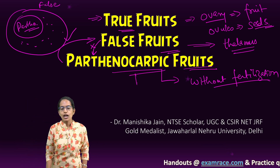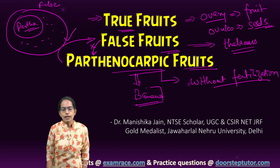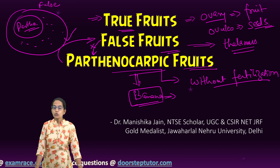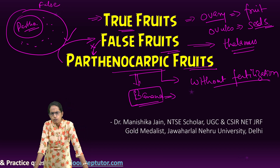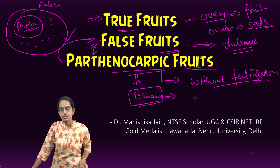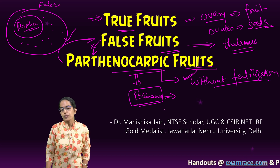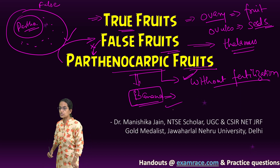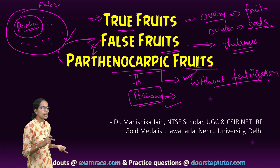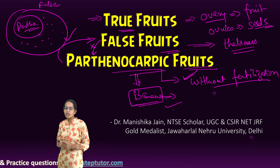The best example of a parthenocarpic fruit is banana. Parthenocarpic fruits are usually seedless because there is no fertilization that occurs. Also, parthenocarpic fruits can be a result of growth hormones — they can be prompted by growth hormones to generate.